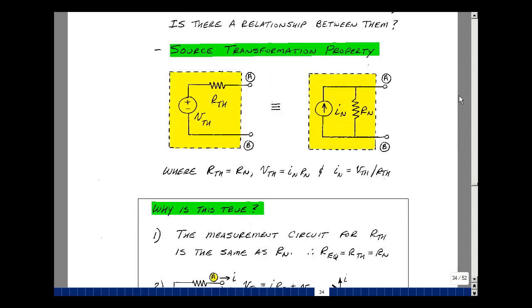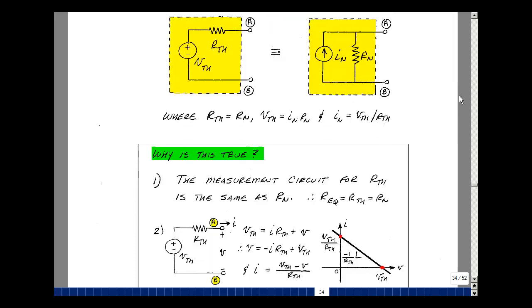Now why is this true? In the proof of Thevenin and Norton's theorem, the circuit that was used to calculate R Thevenin and R Norton was the same, so they are equal to each other.